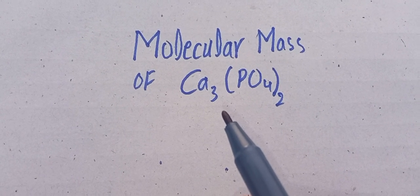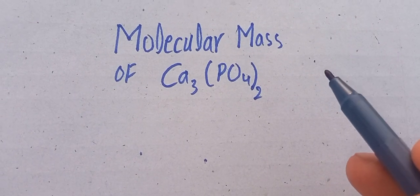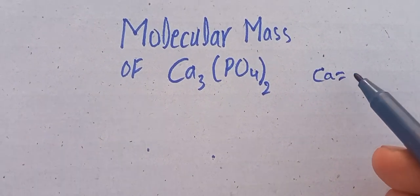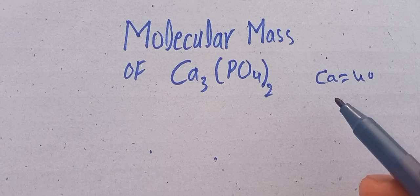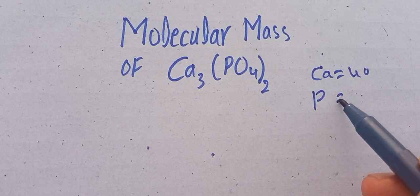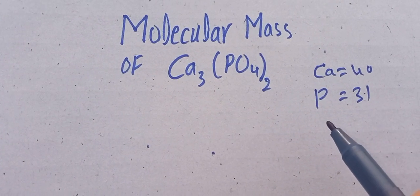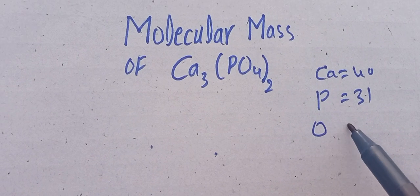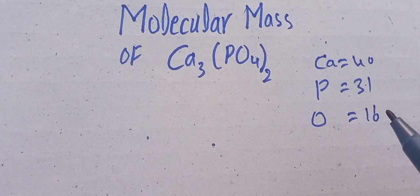As we know, the atomic mass of calcium is 40 grams per mole, the atomic mass of phosphorus is 31 grams per mole, and the atomic mass of oxygen is 16 grams per mole.